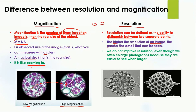Magnification is like zooming in, while resolution differentiates between two points. Sometimes when you zoom into an object you still cannot clearly see it, because the resolution of your camera is very low. You have magnified it, but you cannot clearly see it. We do not improve resolution simply by enlarging photographs, even though they are easier to see when larger. Here you can see this image has low resolution.